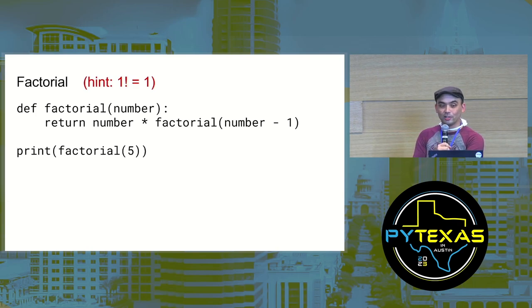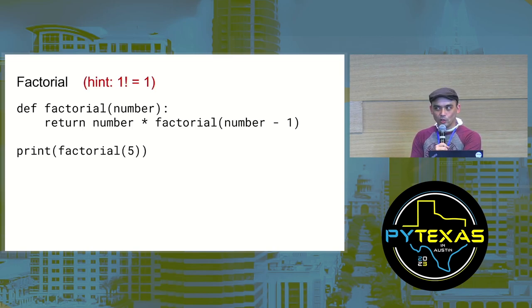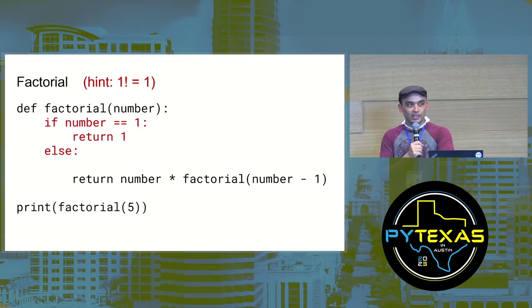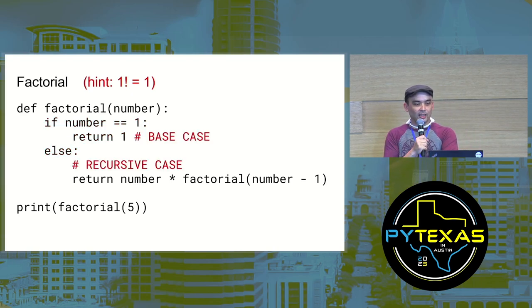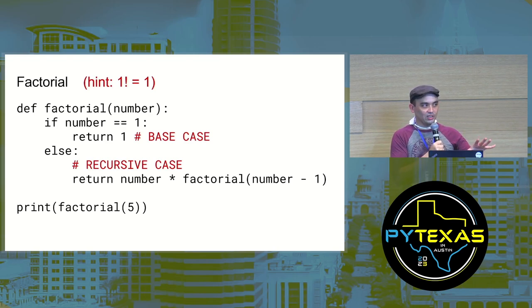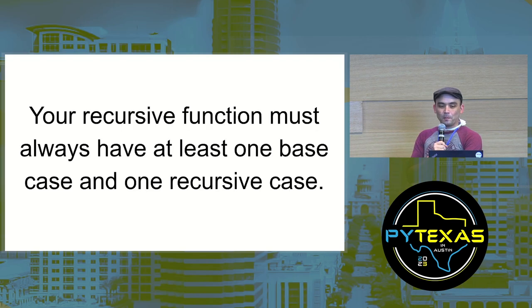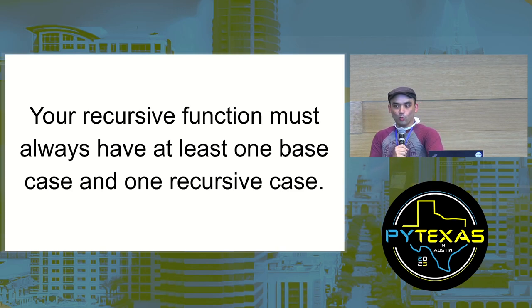To fix the stack overflow, we want to stop recursing when the number argument is one. One factorial is always one, so we add code that checks if number equals one and returns one. This is called the base case — the circumstance under which you stop making recursive function calls. The other part, where we make a recursive function call, is the recursive case.